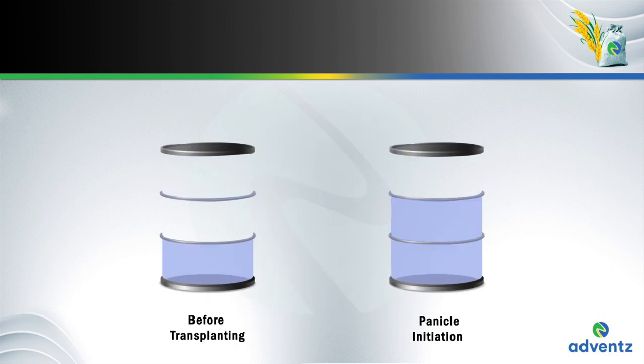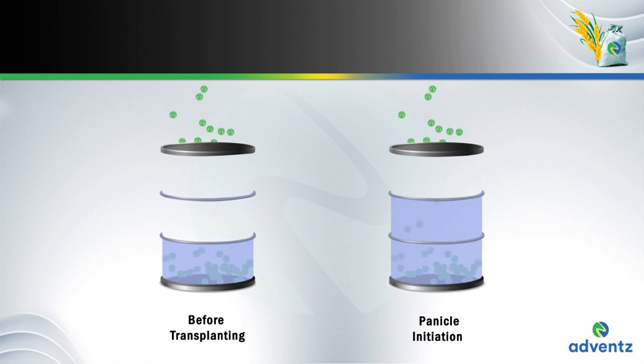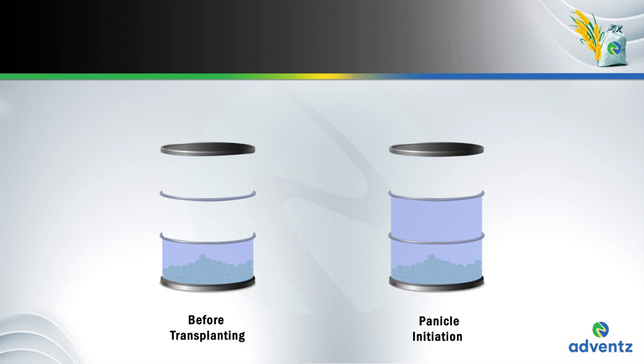Potassium is also split, but not equally. Rather, it is split as two-thirds and one-third. We apply the two-thirds of potassium before transplanting and one-third part of potassium is applied at panicle initiation stage.